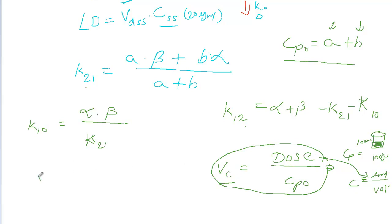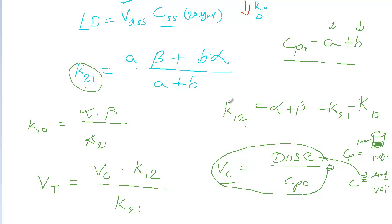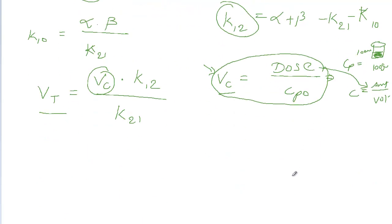The next step is to find Vt: it equals Vc times K1 to 2 divided by K2 to 1. We have K2 to 1, K1 to 2, and Vc, so we can calculate Vt. Then VDSS — volume of distribution at steady state — is simply Vc plus Vt.